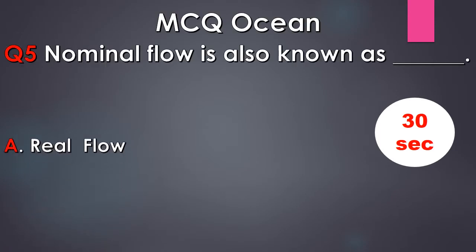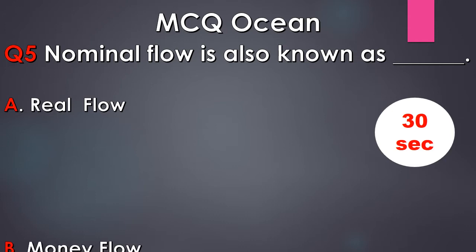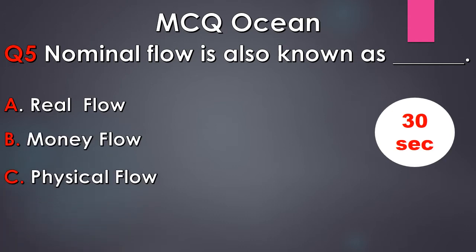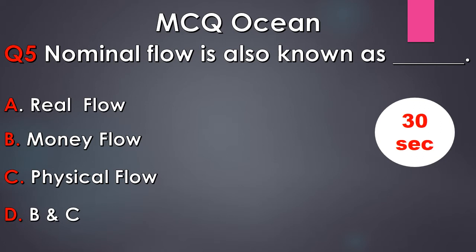Question number 5. Nominal flow is also known as: A. Real flow, B. Money flow, C. Physical flow, D. Option B and C both. Your time starts now.